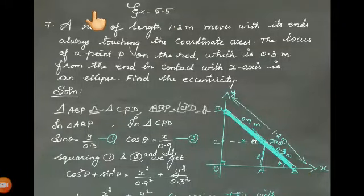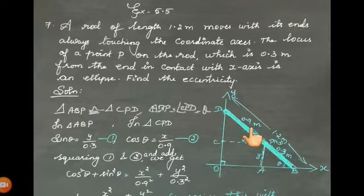Exercise 5.5, 7th sum. A rod of length 1.2 meter moves with its ends always touching the coordinate axes. Draw the coordinate axes, x-axis and y-axis, and draw a rod. So this is a rod, BD.